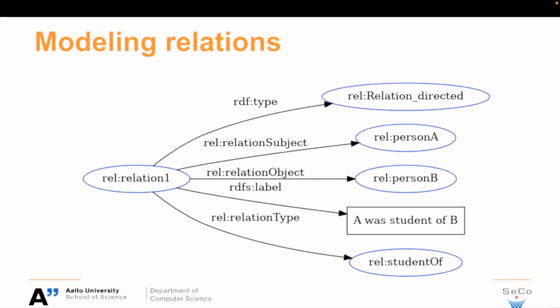Here is an example of the model of the relation instance. There's a type of relation, and then there's a relation subject and relation object — so person A and person B. Then there's a relation type, 'was a student of,' and then there is a label that represents the human-readable explanation — so 'A was a student of B' in this case. There's a separate instance of relation for each connection.